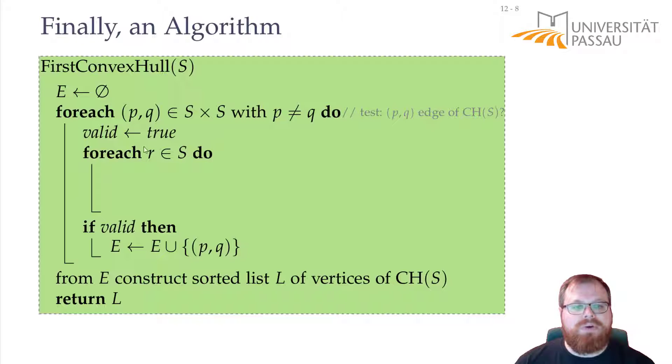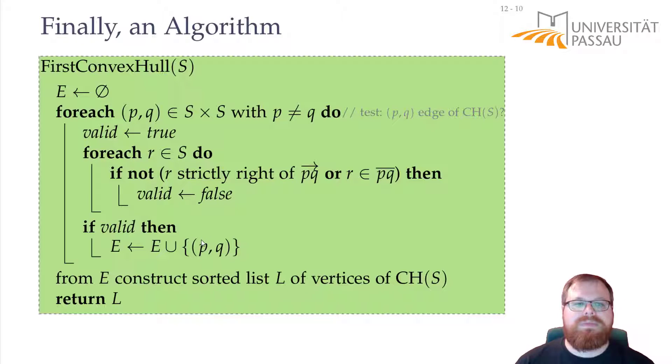So we take every other point and check does this point lie strictly to the right of this directed segment or does this point lie on the line? And if this is not the case, then we know that this edge cannot be a part of the convex hull, so we set our flag to false. So this way, we get all the edges that lie on the convex hull. And afterwards, we only have to construct the sorted list of vertices from it.